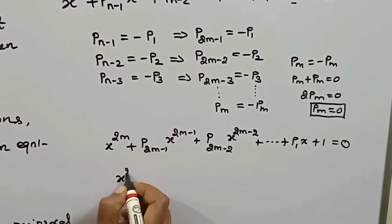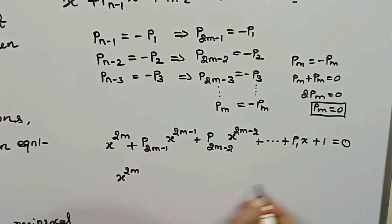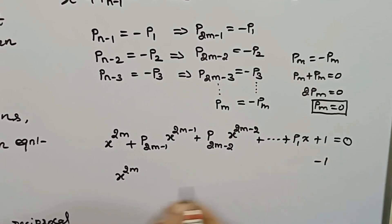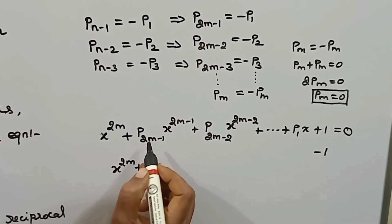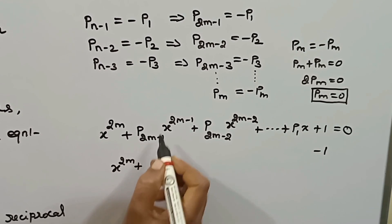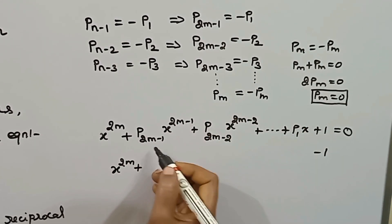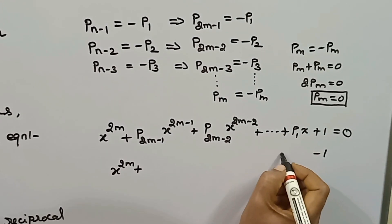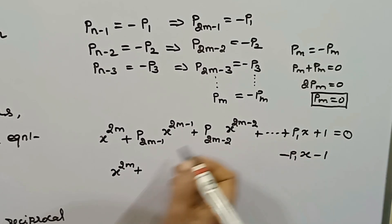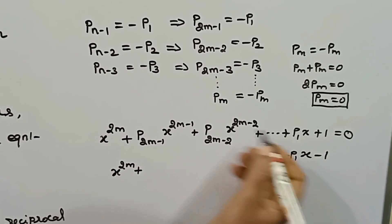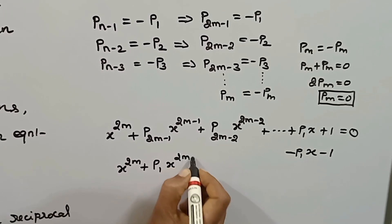The even degree like sign reciprocal equation has the form: x power 2m plus p_{2m-1} x power 2m-1 plus p_{2m-2} x power 2m-2 plus ... plus p_1 x plus 1 equal to 0. For unlike sign, the leading coefficient is positive and the constant is minus 1. The condition p_{2m-1} equals minus p_1 means p_1 is negative.